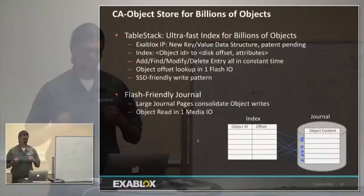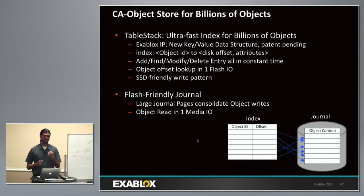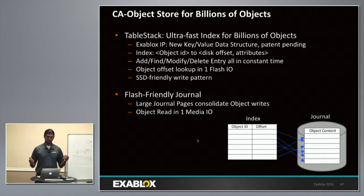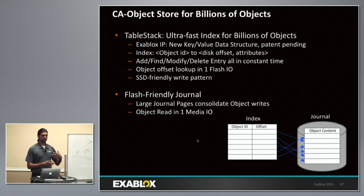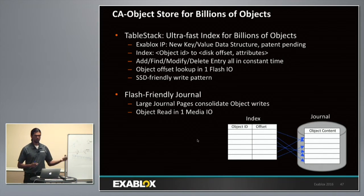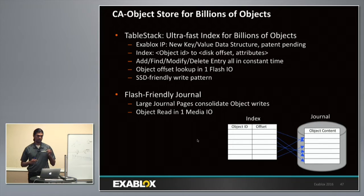There are two parts to going from an object ID to the data. First you have to jump from the ID to the offset of the data, and then you fetch the data. That's why there are two big parts to the CA object store. One is the index — we invented our own index called Table Stack. The biggest reason we did this is that existing key-value databases like RocksDB and LevelDB have logarithmic properties that work great for low millions of index lookups, but when you get to the billions they start to break down and do lots of disk IO just to fetch one ID-to-offset translation. With ours, in one flash IO we can do the index translation from object ID to offset.